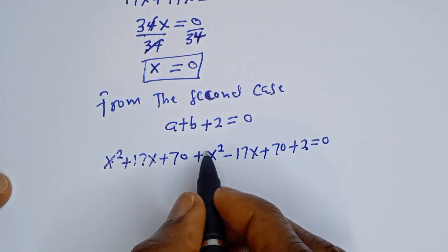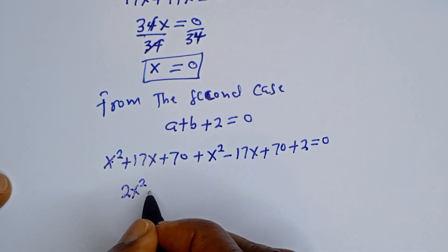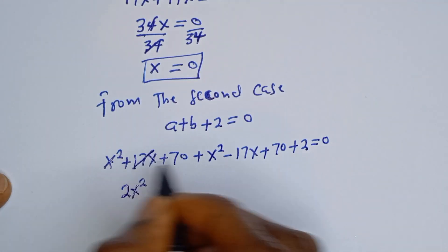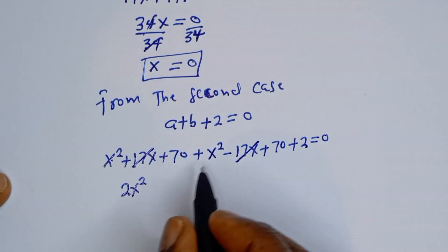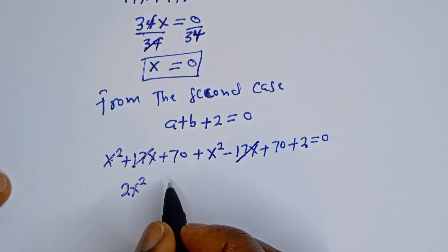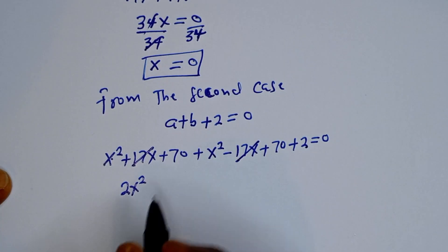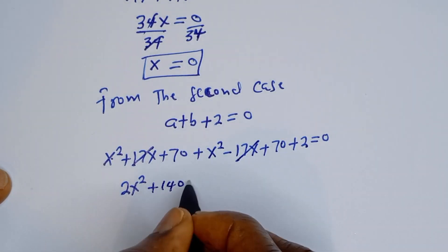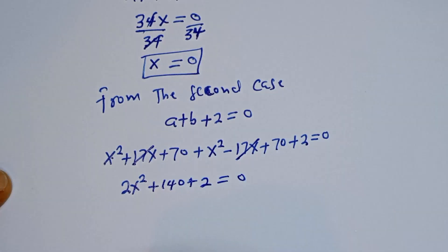Now if we look at this: S squared plus S squared is 2S squared. The 17S and minus 17S cancel each other. Then 70 plus 70 gives 140. So we have 2S squared plus 140 plus 2 equals 0.